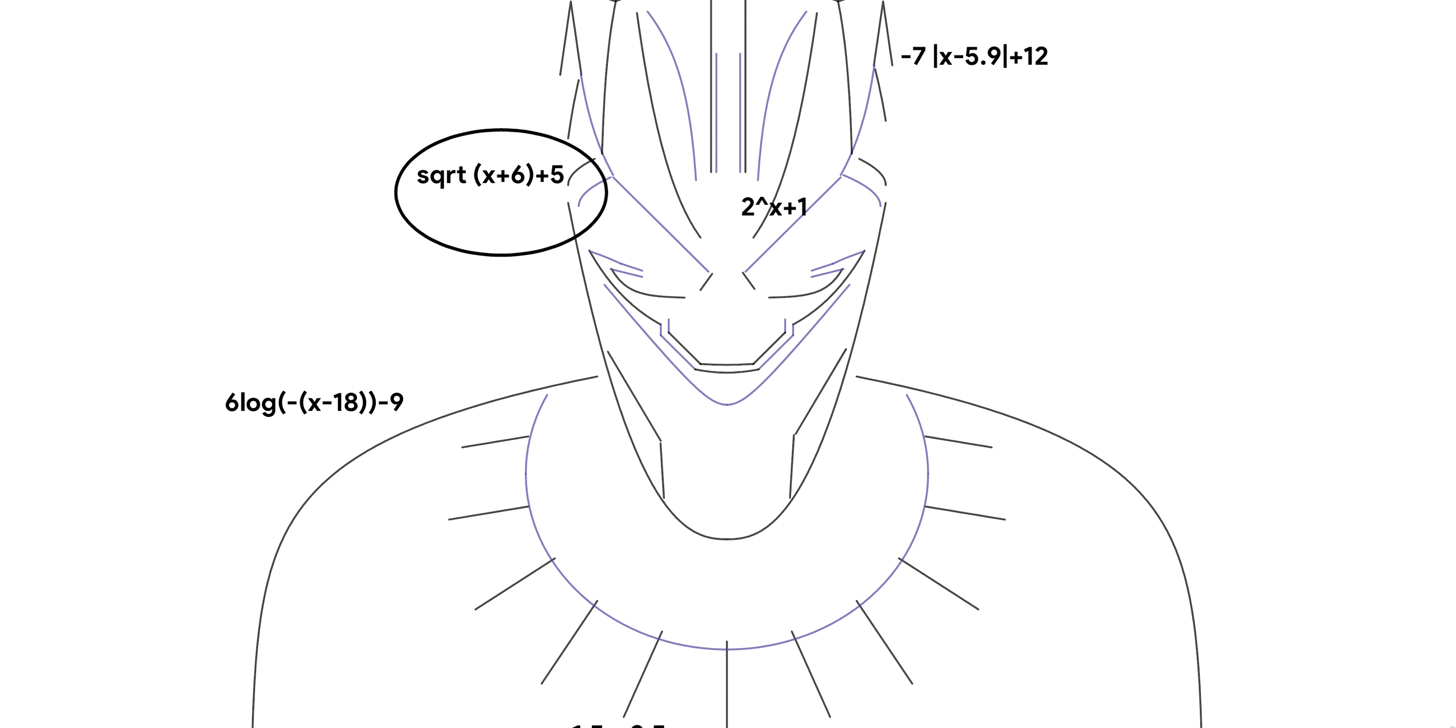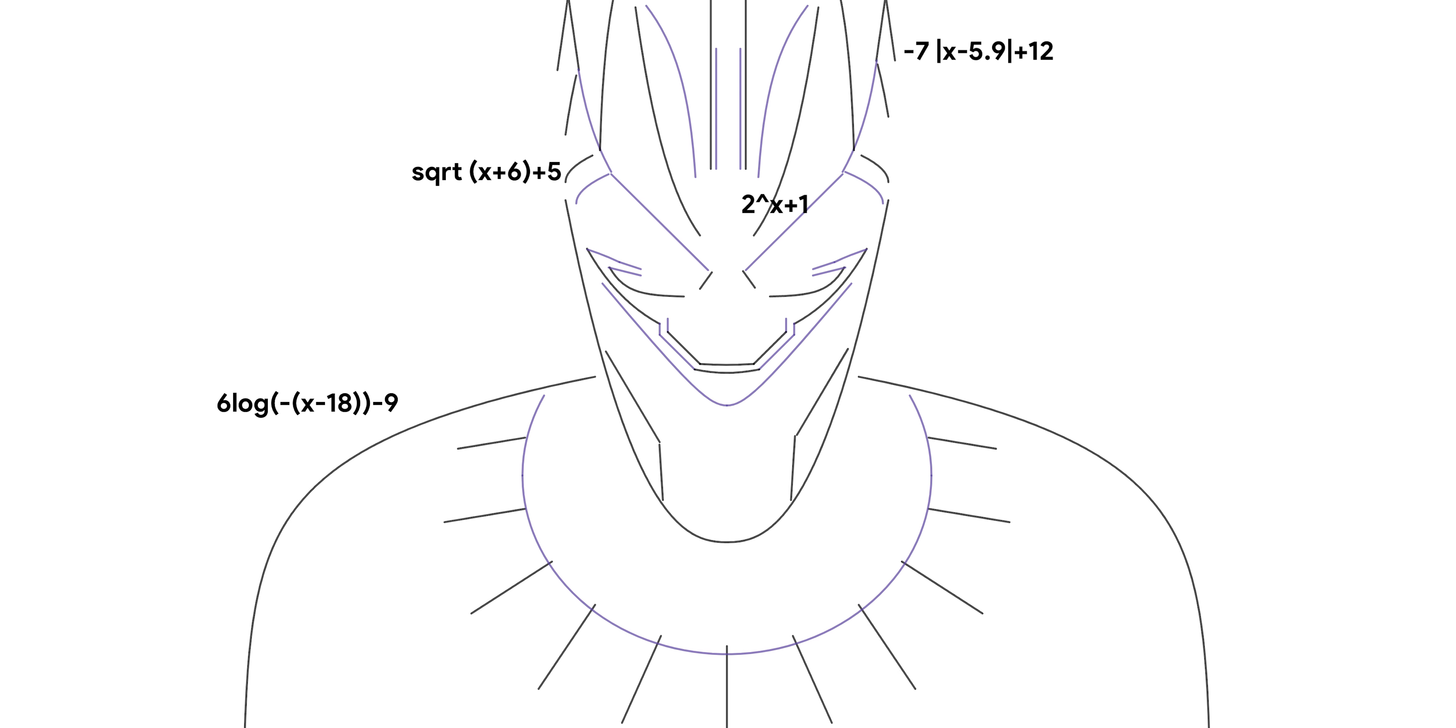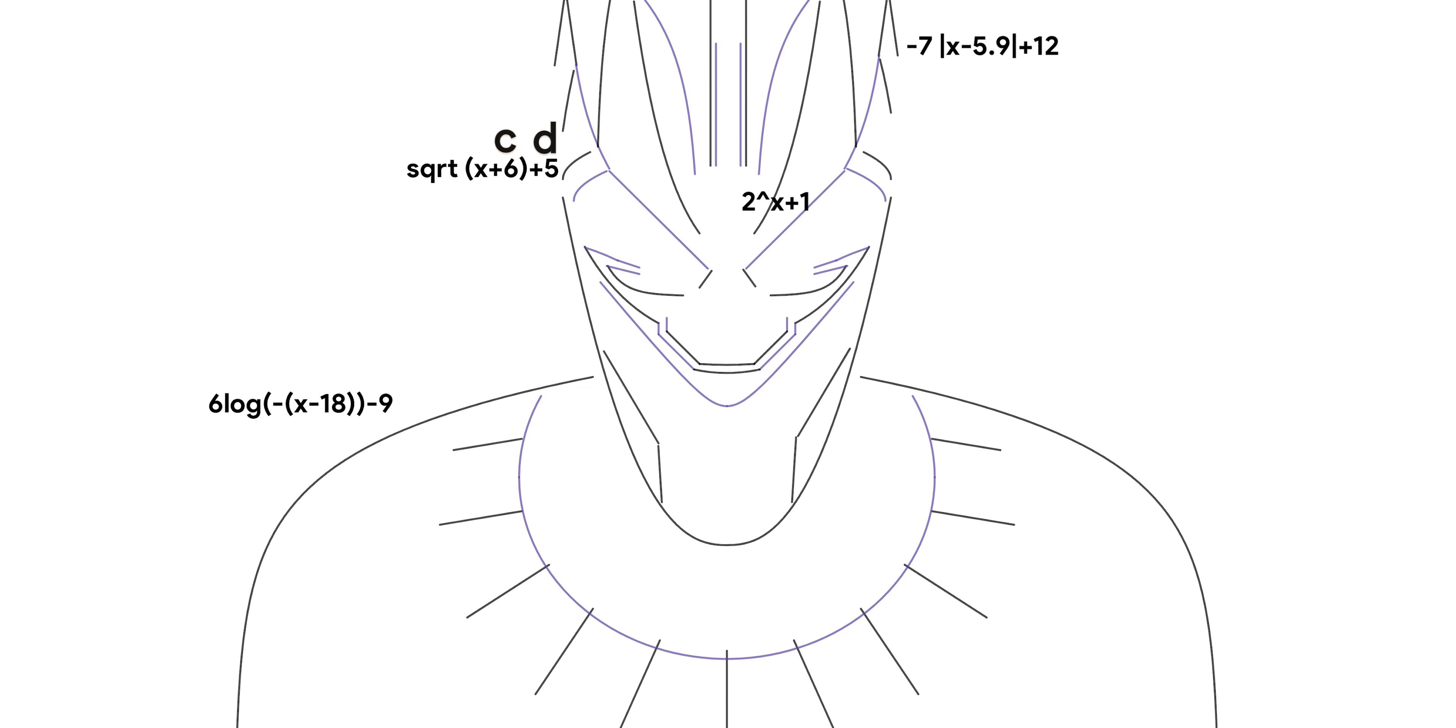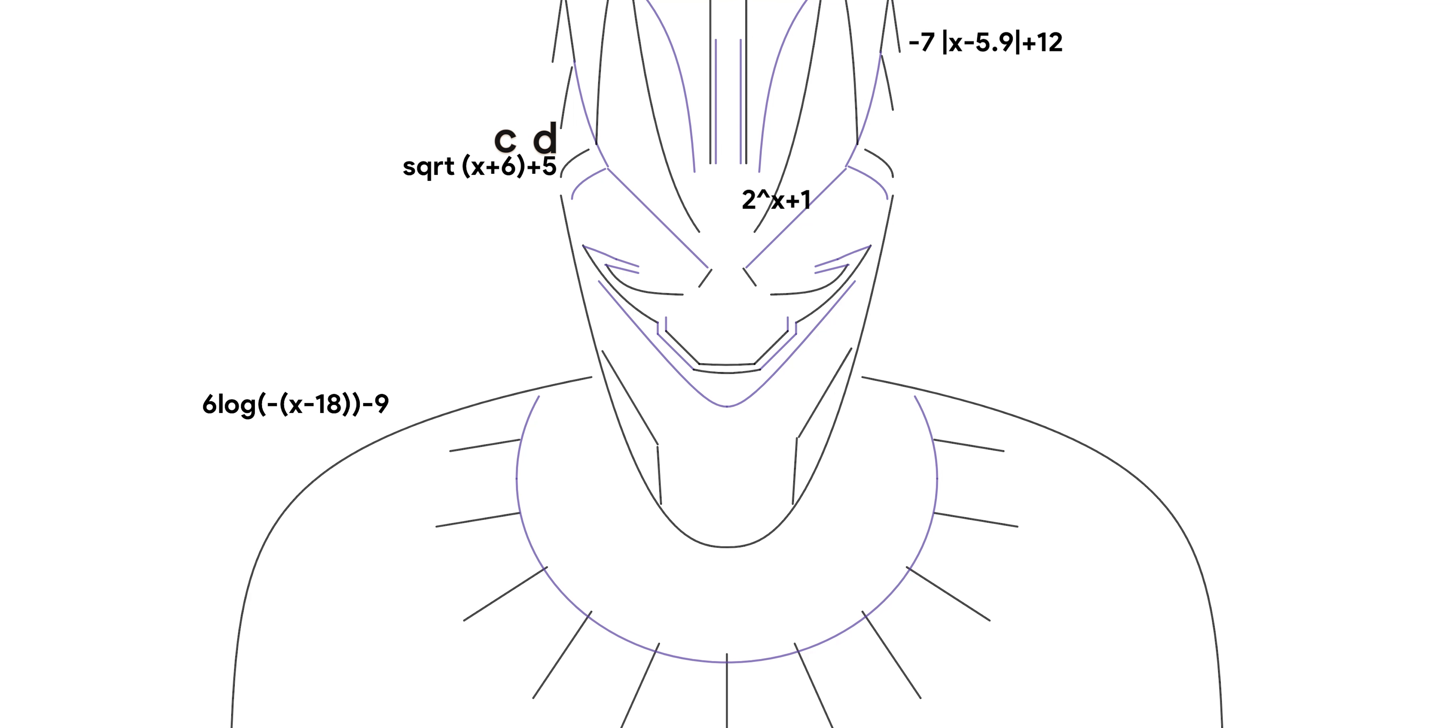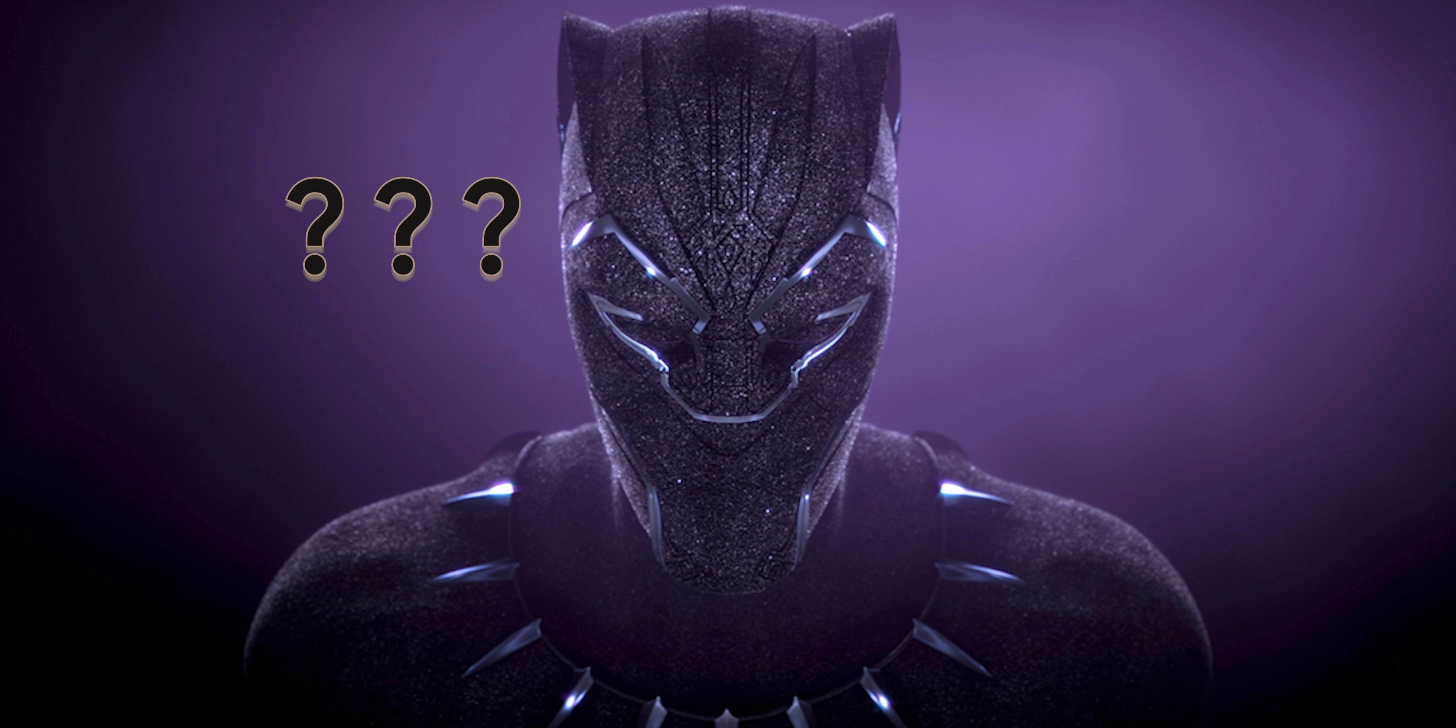Next, let's do square root x plus 6 plus 5. I moved the function left 6 and up 5. This means c is negative 6 and d is 5. And I added 6 and added 5. This function represents the little eyebrow thing in the picture, like part of the mask.